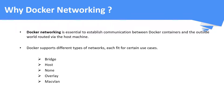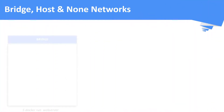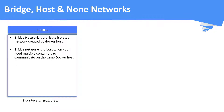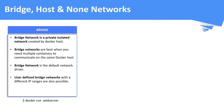The network types are: bridge, host, none, overlay, and macvlan networks. First is bridge network — a bridge network is a private isolated network created by the Docker host. Containers deployed in the bridge network can communicate with each other and they will not share the Docker host's network. It is the default network whenever you start a container unless you specify something else. You can also create a user-defined bridge network with different IP ranges if you are not happy with the IP ranges of the default bridge network.